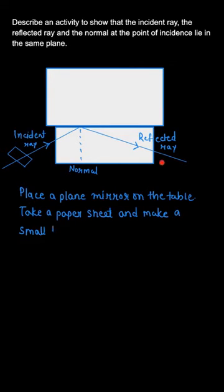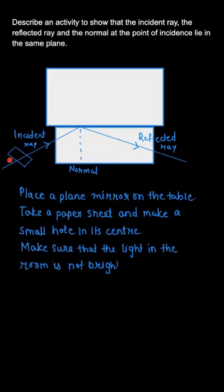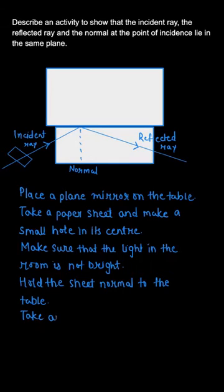We will keep another white sheet of paper here, and I have drawn a normal to this plane mirror on this white sheet. We will make sure that the piece of paper with the hole is kept normal to the table, and this entire experiment must be conducted in a dark room so that extra light would not affect the experiment.